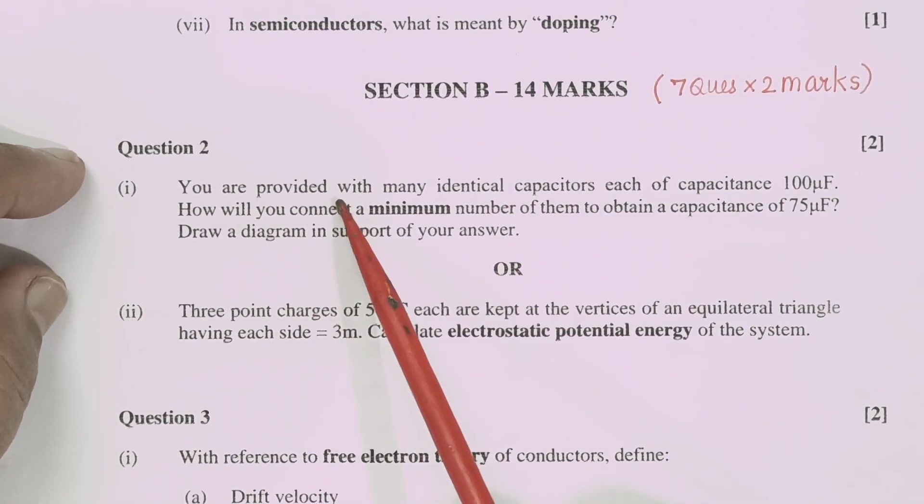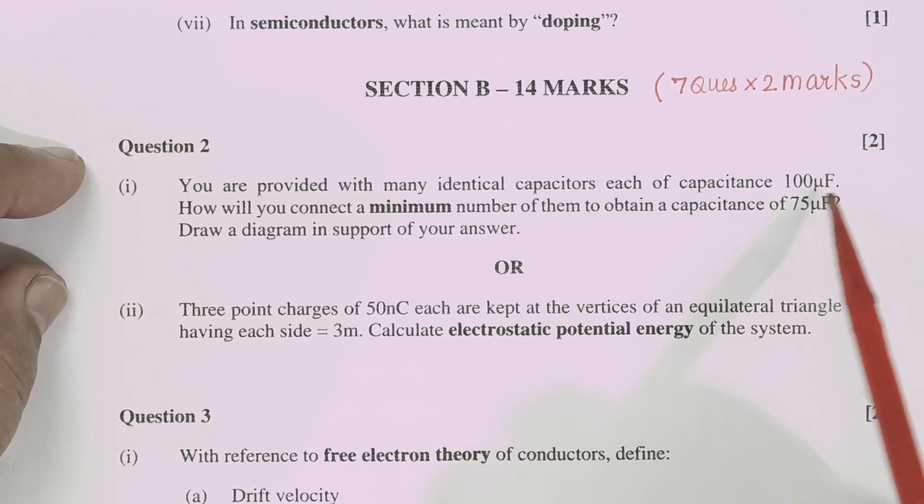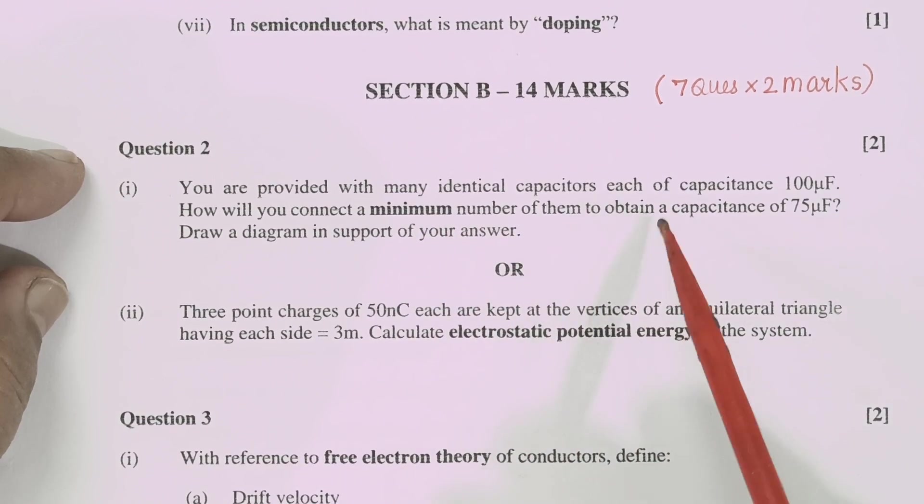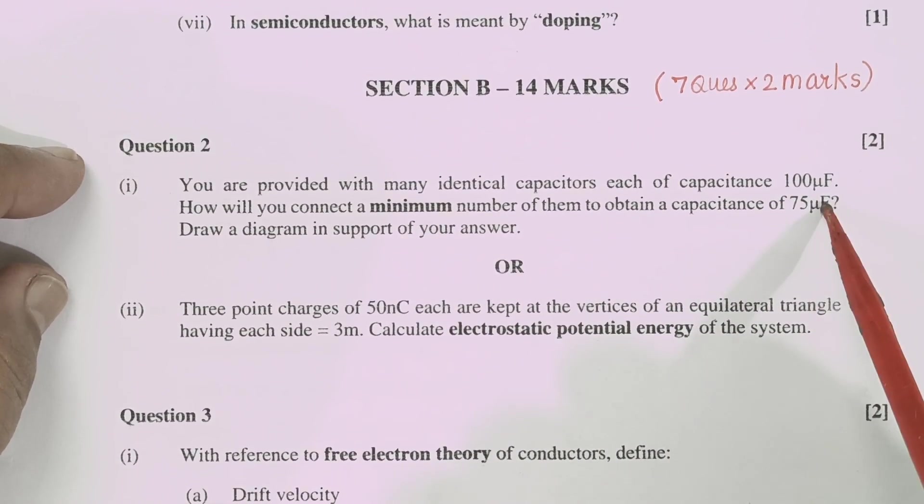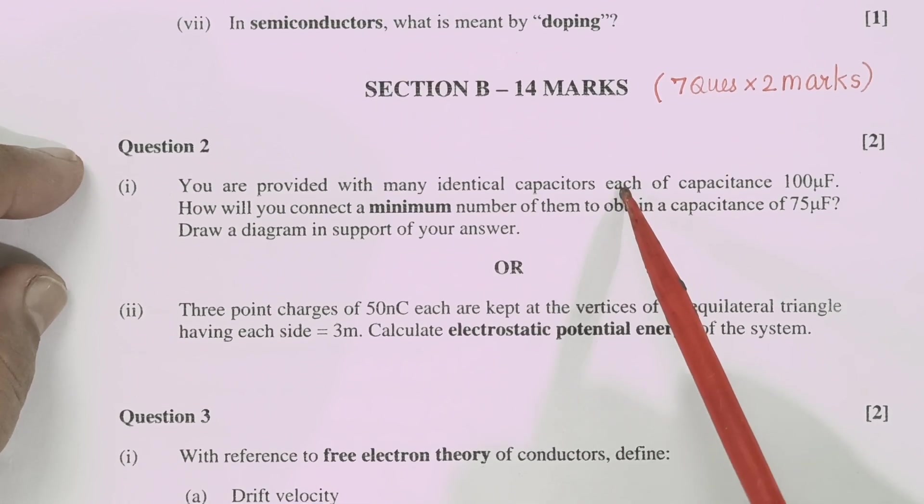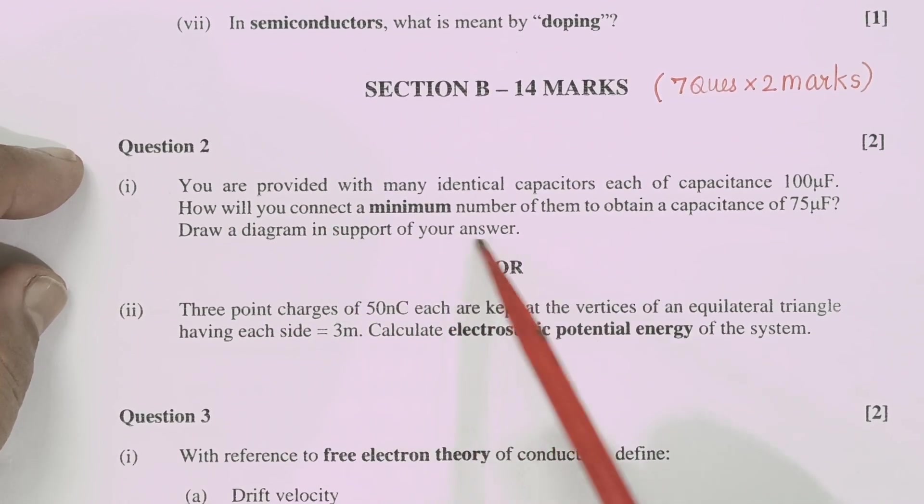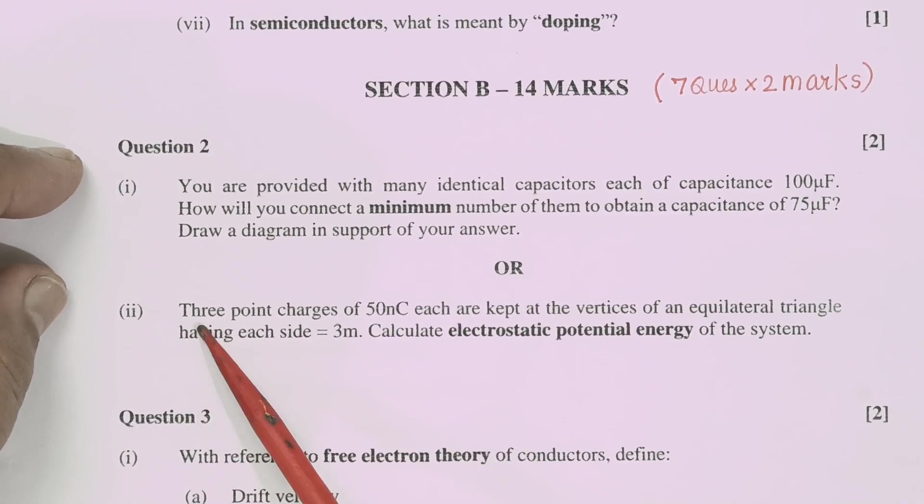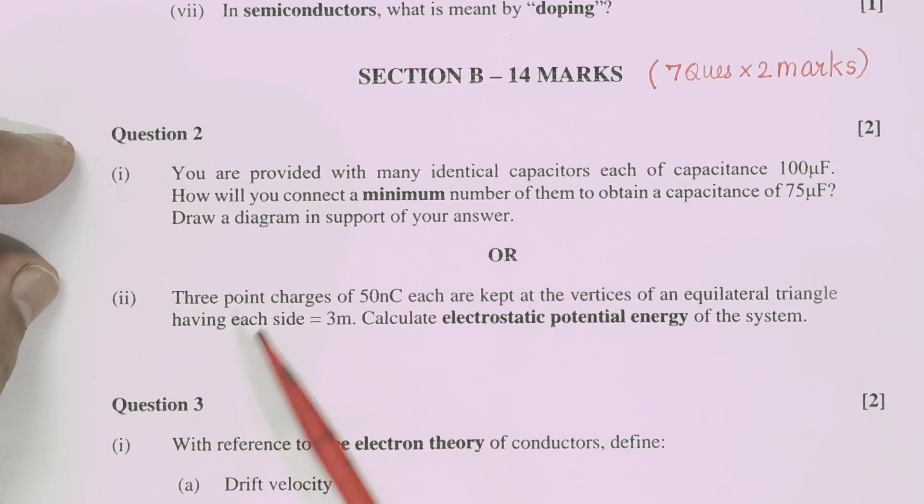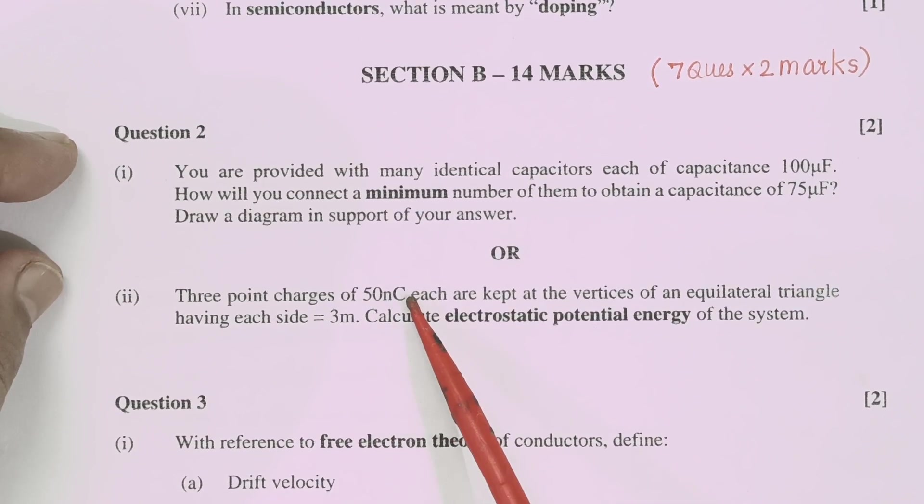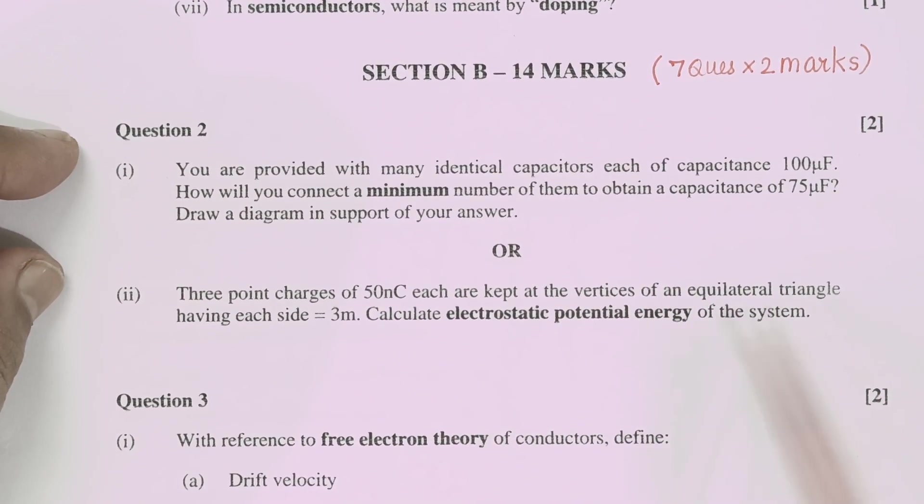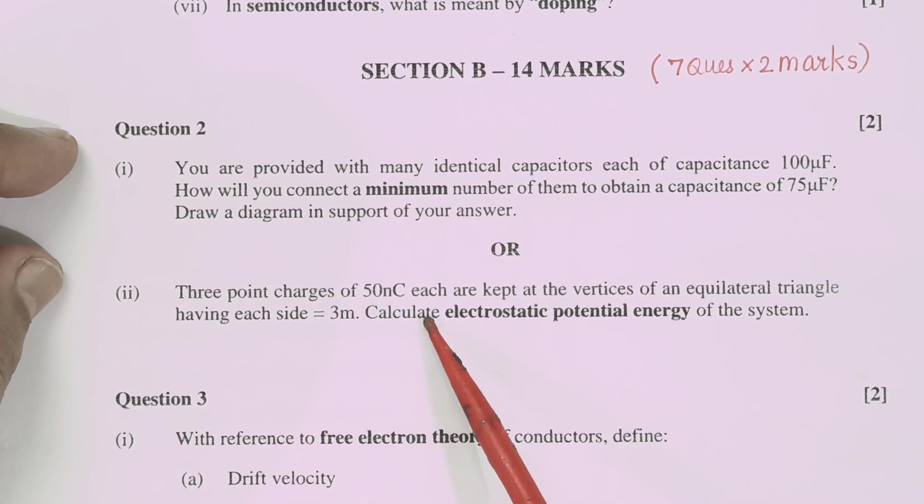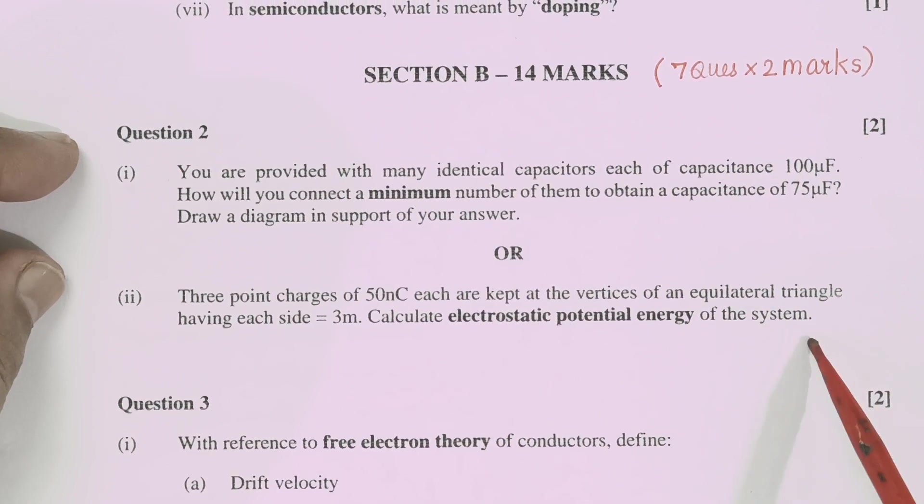Like you are provided with many identical capacitors each 100 microfarad. How will you connect a minimum number of them to obtain a capacitance of 75 microfarad? So here you need to calculate it right. And draw the diagram in support of your answer. Either you opt this question or you opt this question from the same topic capacitor. 3 point charges of 15 nanocoulomb each are kept at the vertices of equilateral triangle having each side equal to 3 meter. Calculate electrostatic potential energy of the system.